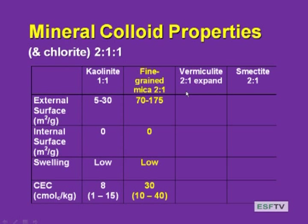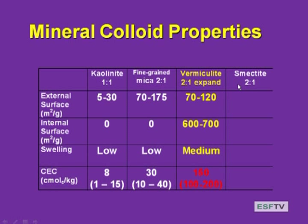Vermiculite is two-to-one with limited expansion. It has about the same or slightly lower external surface area, so the crystal size is about the same as fine-grained micas. Here we have internal surface area up to 600 to 700 meters squared per gram. Water and cations can fit in between those 2:1 tetrahedral-octahedral layers, giving it a higher CEC. Medium swelling and an average CEC of 150 centimoles of charge per kilogram over a pretty wide range.